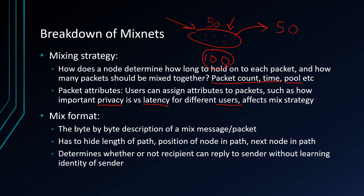The second component is the mix format — a byte-by-byte description of a specific mix packet. It has to hide the length of the path, the position of the node in the path, and the next node in the path. It also determines whether or not the recipient can reply to the sender without learning the identity of the sender, and consequently whether or not an adversary can distinguish between a forward packet — going toward the recipient — or a reply packet going in the opposite direction.